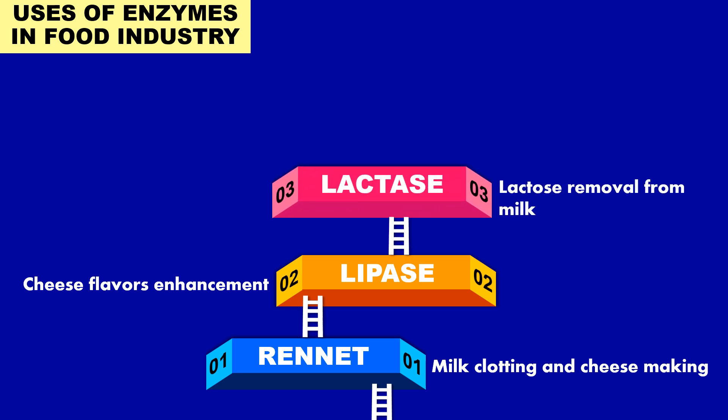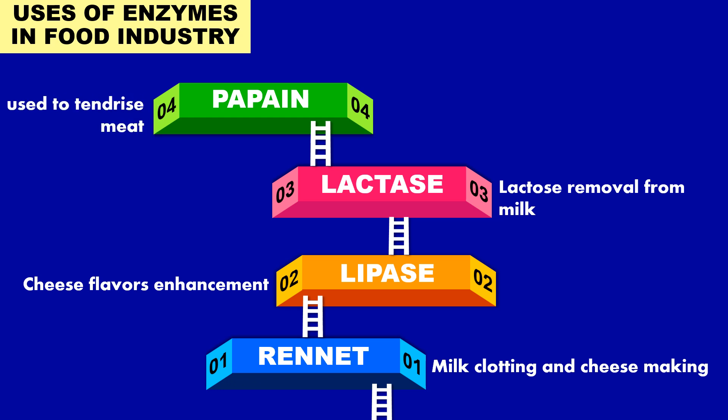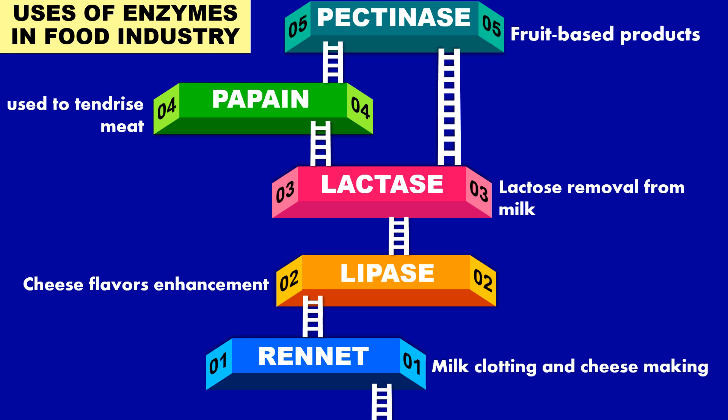Next is lactase, which is used to remove lactose from milk. Another example is papain, which is used to tenderize meat — it is used in the meat industry to soften the meat. And next are pectinases, which are used in fruit-based products to clarify fruit juices.